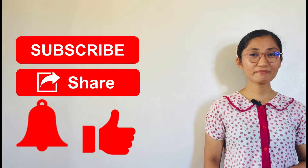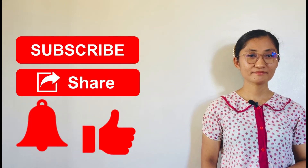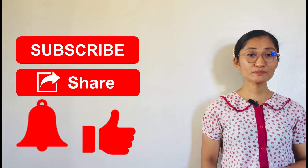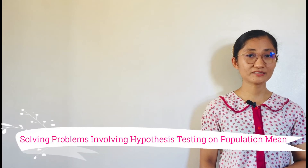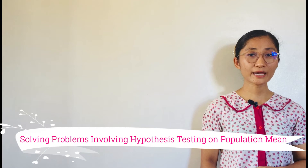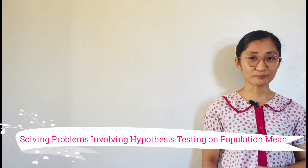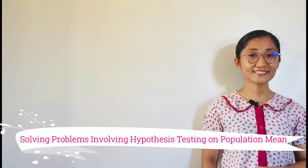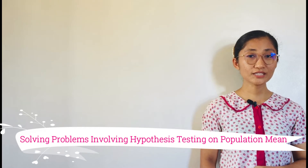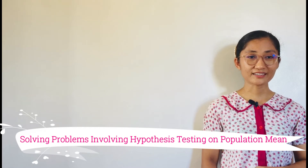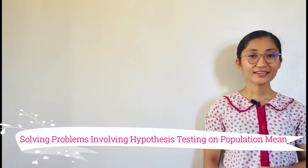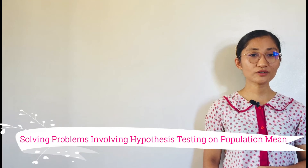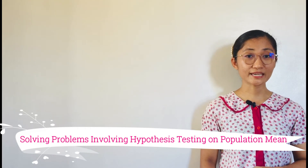Hello everyone, I'm Teacher Neth, and welcome back to Statistics and Probability class. The concepts you have learned in the previous lessons are enough for us to solve problems involving hypothesis testing on population mean. Once the computed value of the test statistic is derived, you need to compare it with the critical value. Hence, you need to refer to the z-table and t-table.